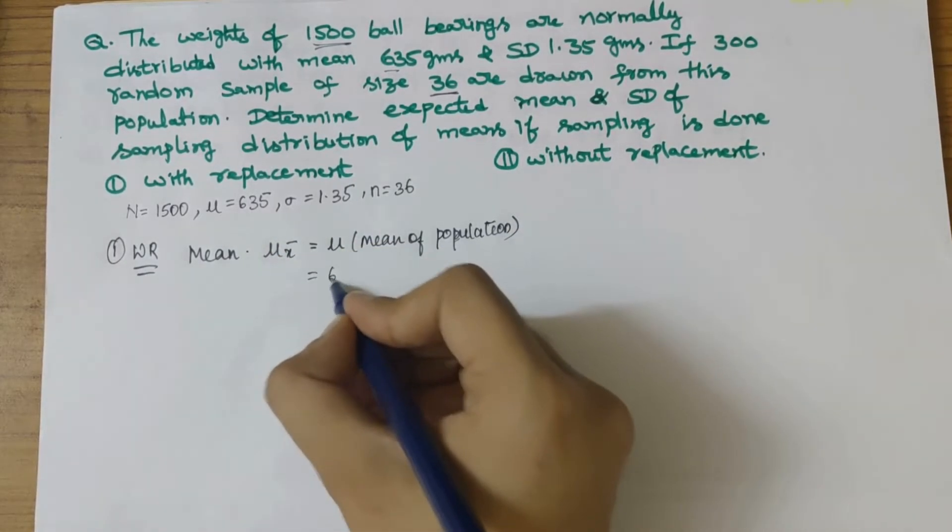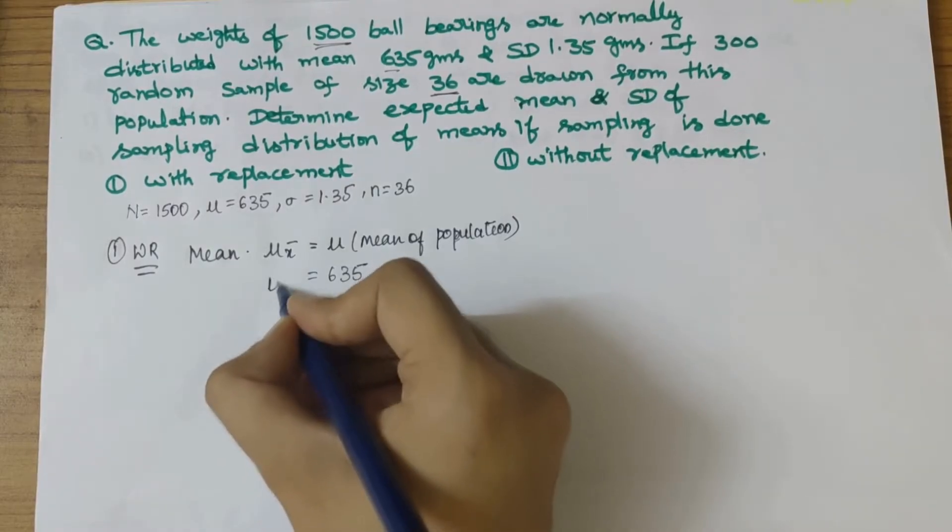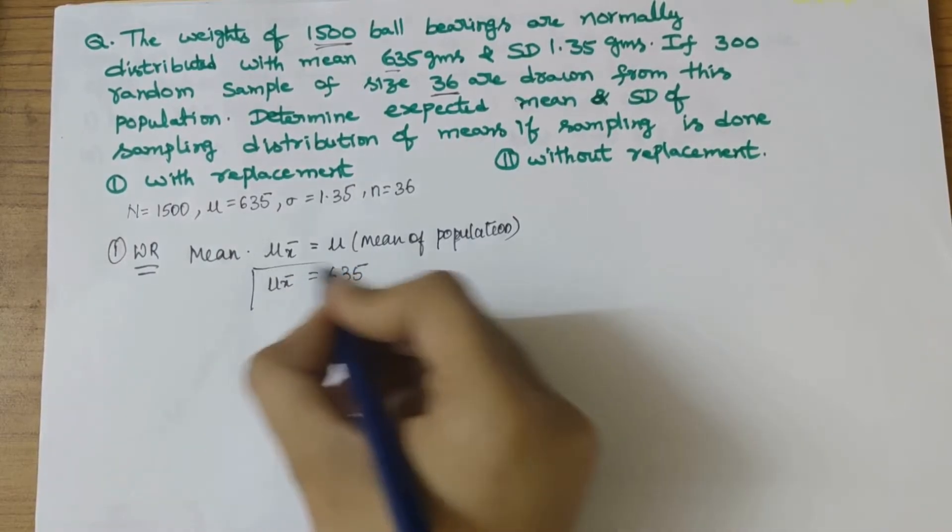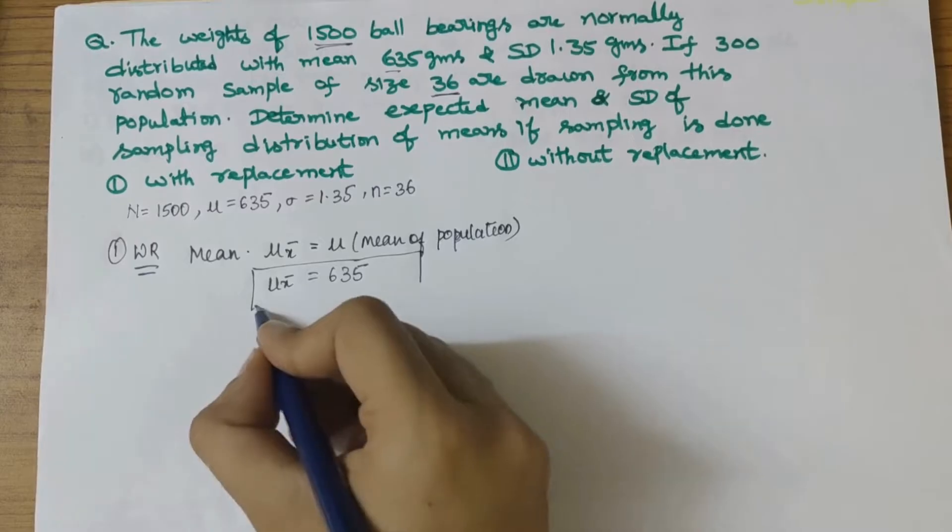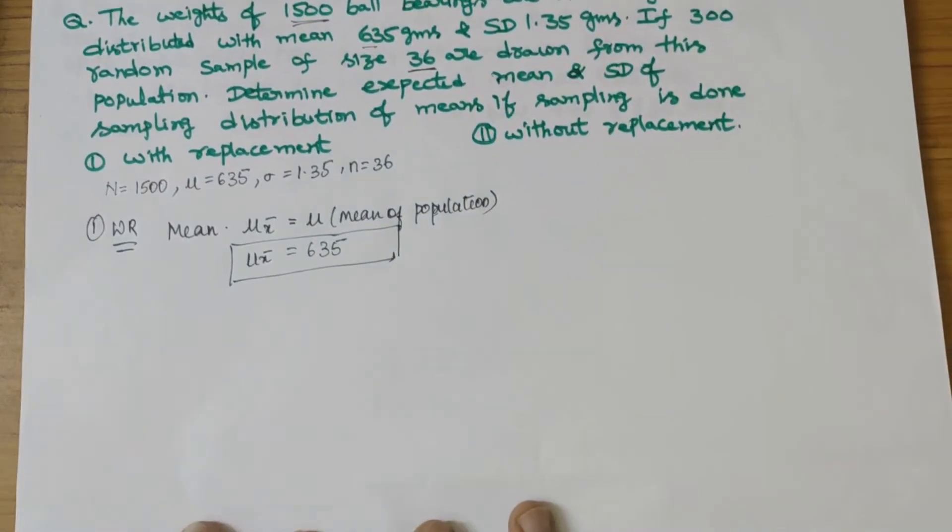The population mean given here is 635, thus our sample mean with replacement would also equal 635.